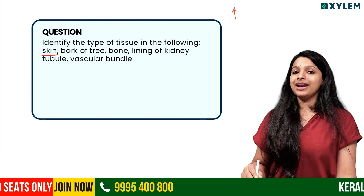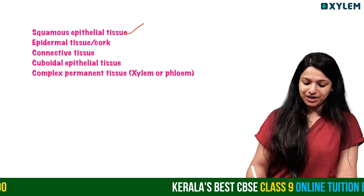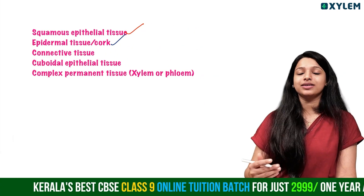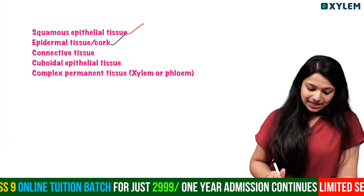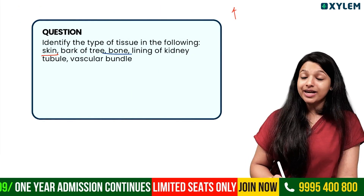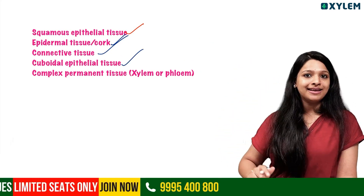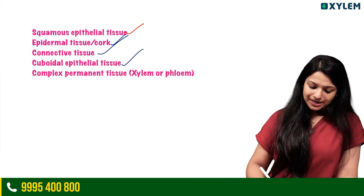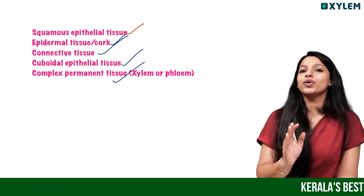Skin has squamous epithelial tissue. Bark of tree has cork cells — epidermal or cork tissue. Bone is connective tissue. Lining of kidney tubules has cuboidal epithelial tissue. Vascular bundle is a complex permanent tissue — xylem and phloem both.